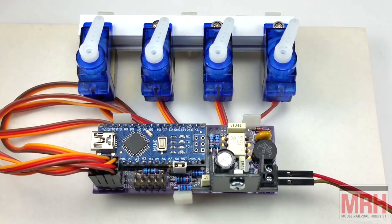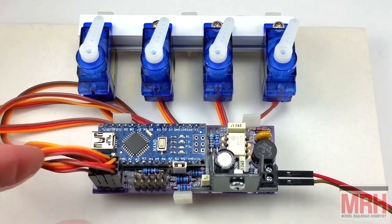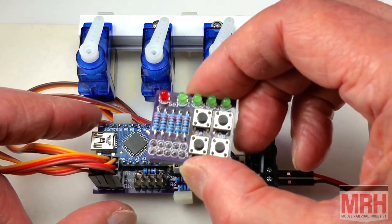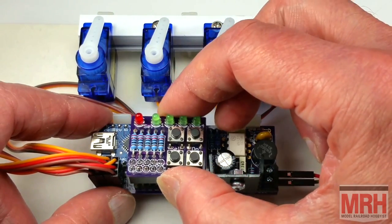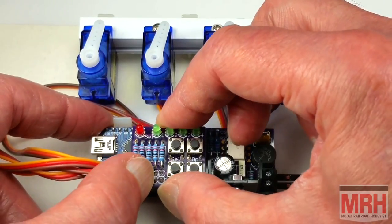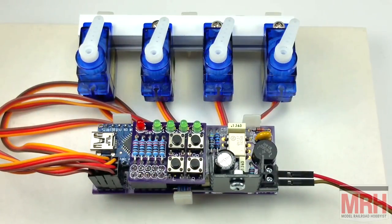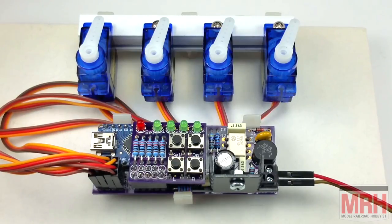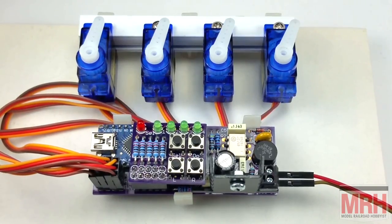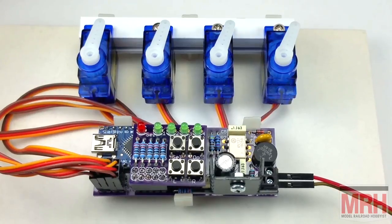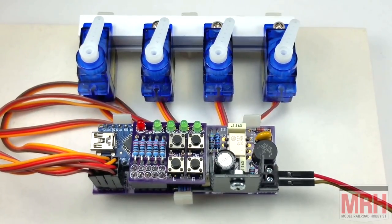So here we have the decoder with four attached servos. The first task is to plug in the keypad either directly or attach it via cable as we'll see later. Now we connect the decoder to your DCC power on the track. All the LEDs light then go out and we're ready to begin.